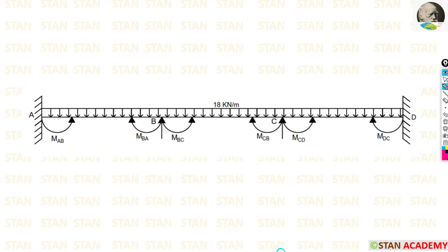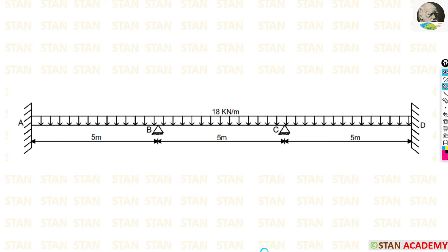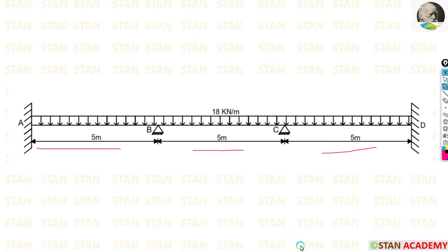In this beam we need to find six moments: MAB, MBA, MBC, MCB, MCD, and MDC. Every span has two slope deflection equations, and with three spans — AB, BC, and CD — we will have six slope deflection equations in total.